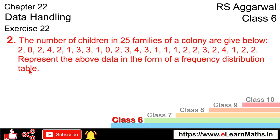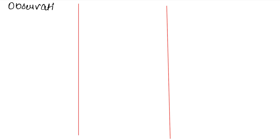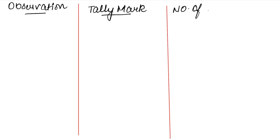To make a frequency distribution table, we need to make 3 columns. The first column is 'Observation', the second column is 'Tally Mark', and the last column is 'Frequency' — or here, 'Number of Families', which tells us how many families have how many children.